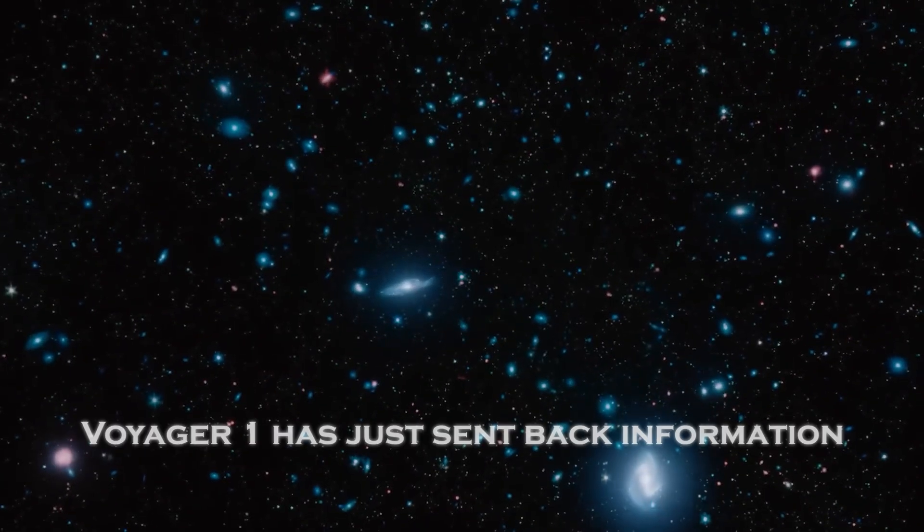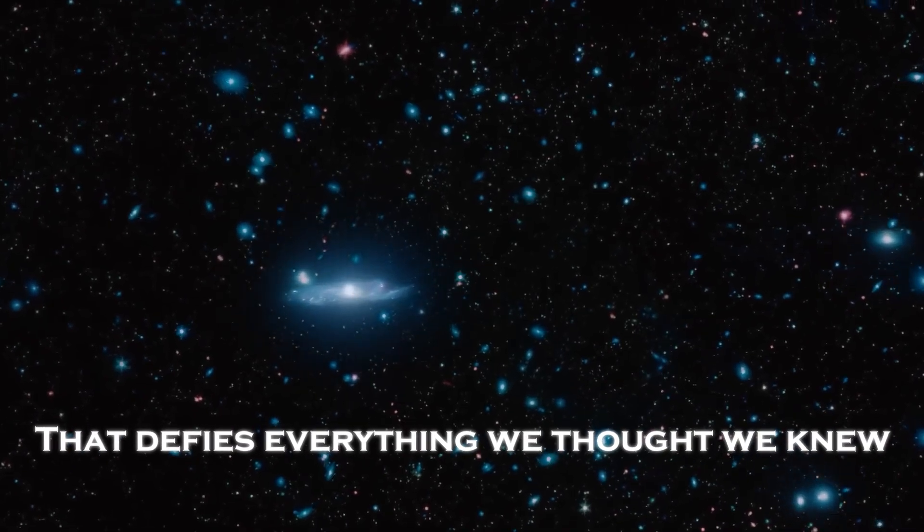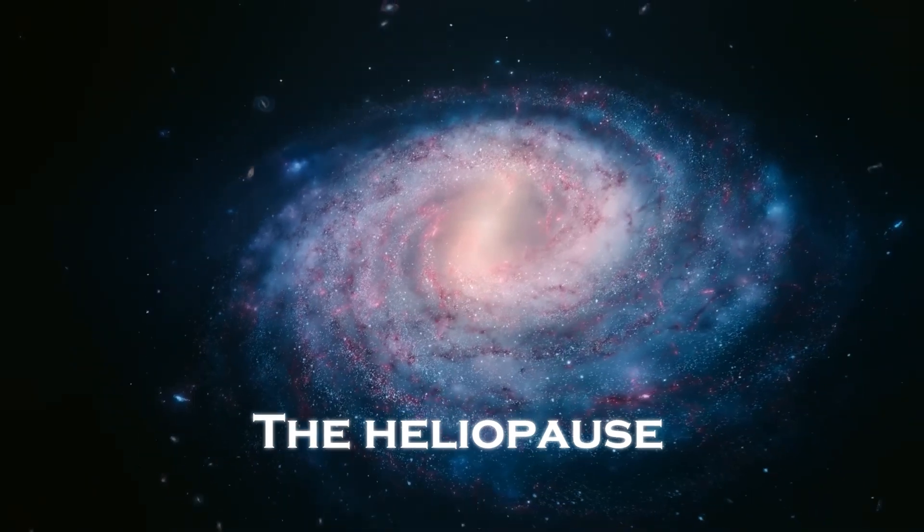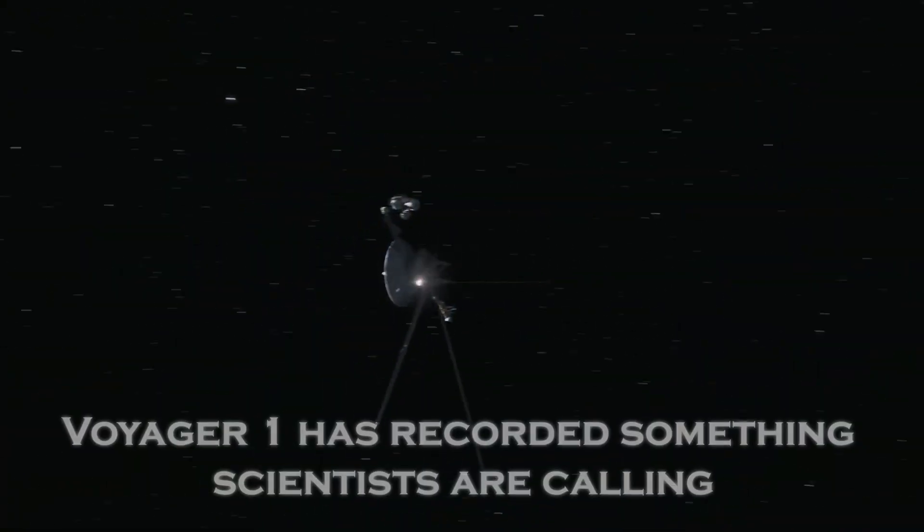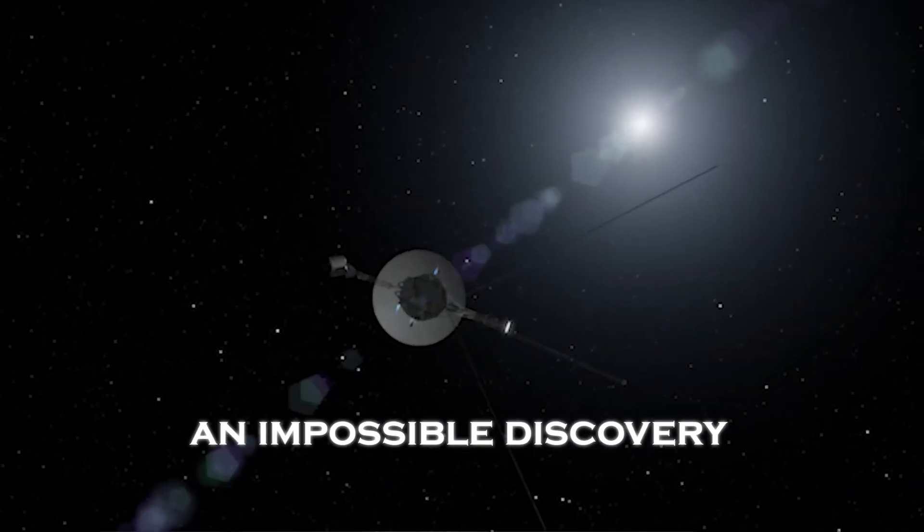But today, Voyager 1 has just sent back information that defies everything we thought we knew. At the edge of our solar system, in an area known as the Heliopause, Voyager 1 has recorded something scientists are calling an impossible discovery.